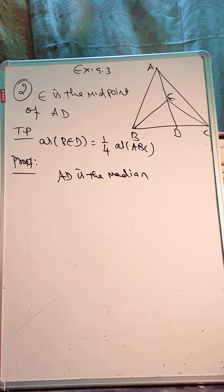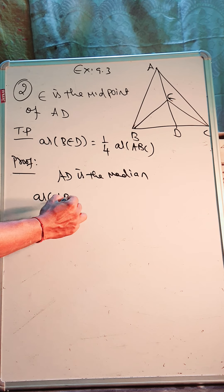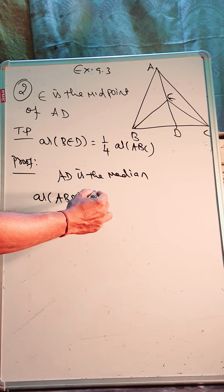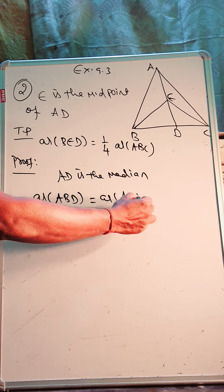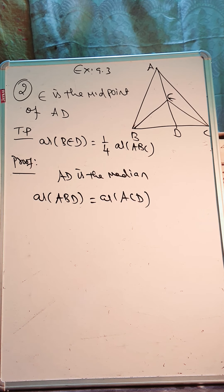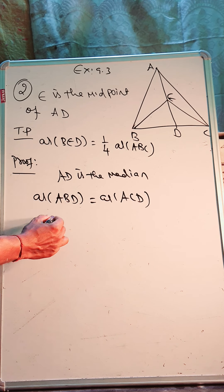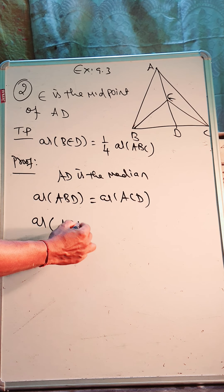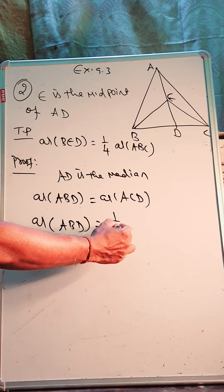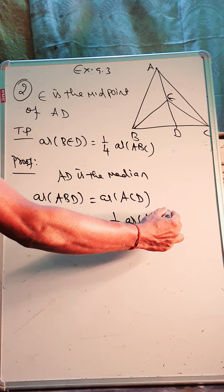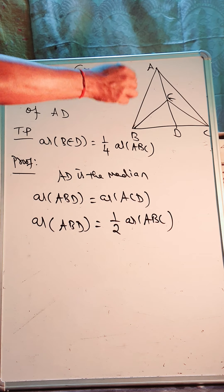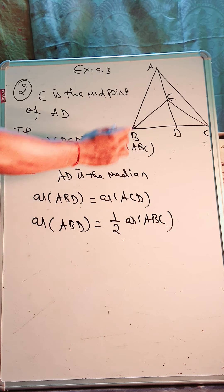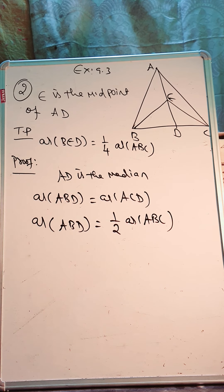If it's a median, similar to the last question: area of ABD is equal to area of ACD. That means area of ABD will be half of area of triangle ABC. Because the whole triangle — ABD and ACD are equal — so ABD will be half of ABC. We can write it like that.